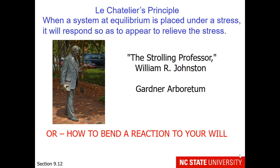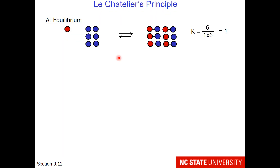Here is a reaction at equilibrium. There is one red sphere and six blue spheres for my reactants, and the product has a covalent bond between red and blue — there are six of them. Our equilibrium constant is products over reactants: 6 divided by (1 times 6). Our equilibrium constant is 1.